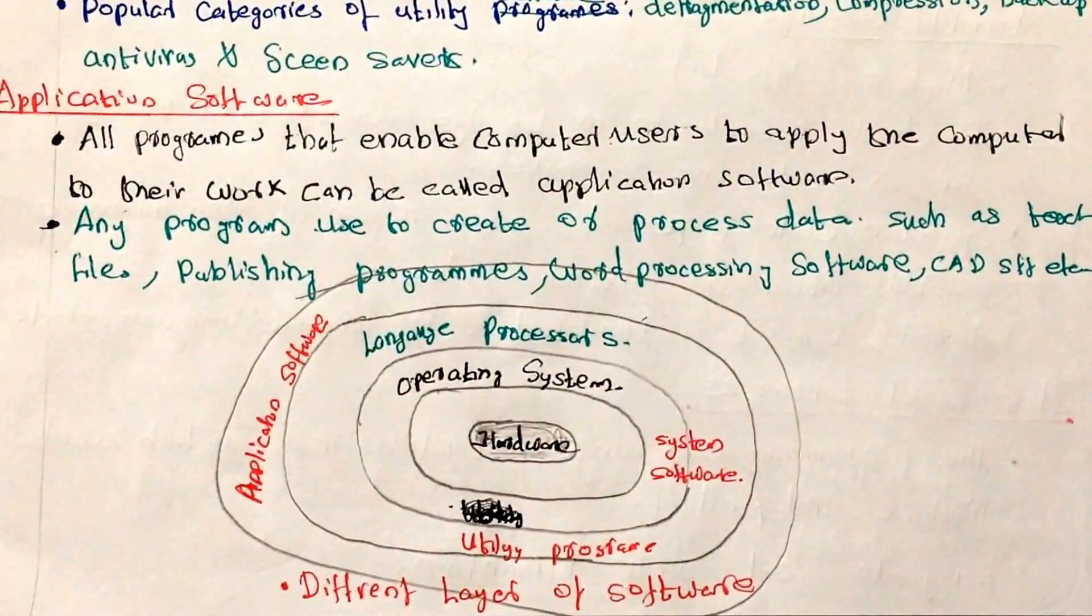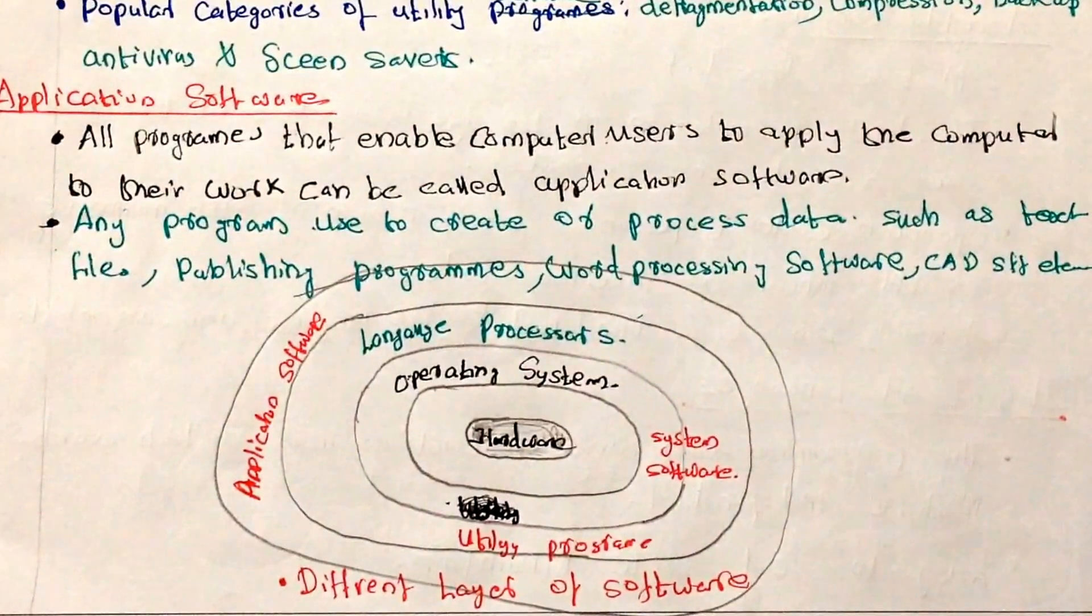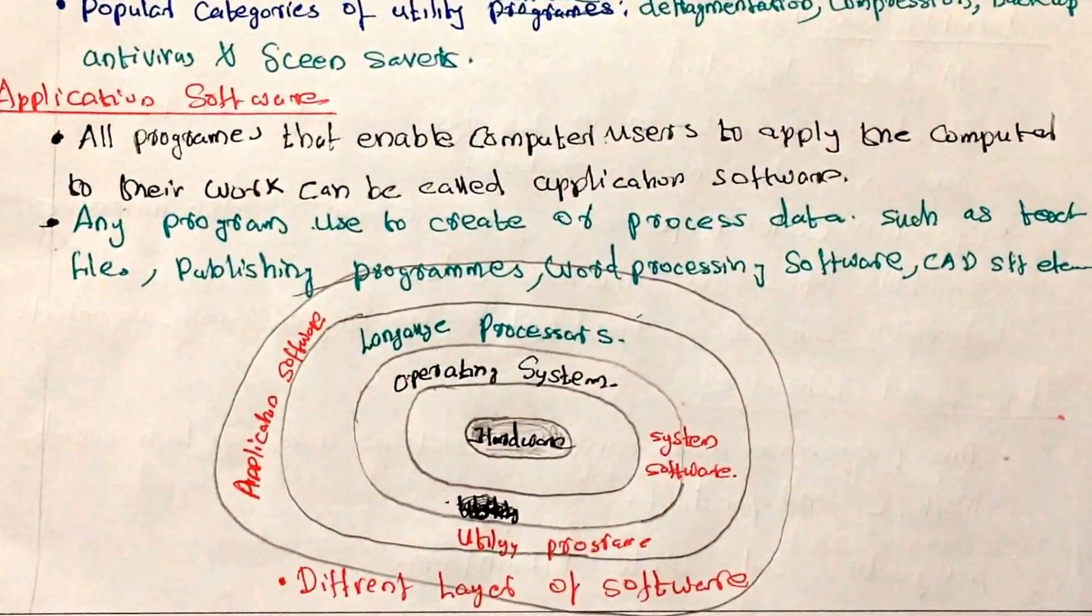And this is the basic idea about what are the types of softwares. I explained to you about system software and application software. I hope you understand the basics of this particular topic. If you like my video please subscribe my YouTube channel. Thank you for watching. Bye bye.